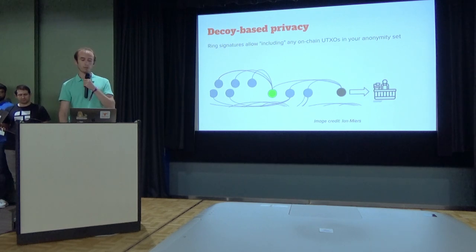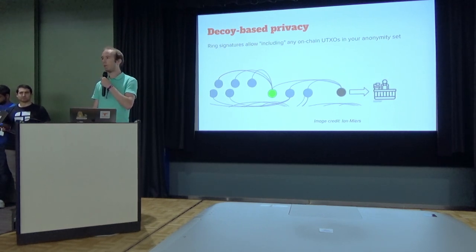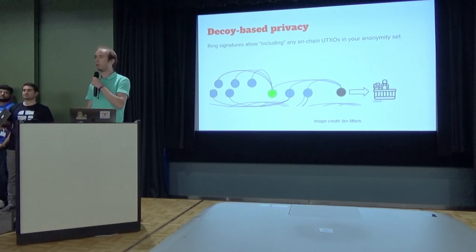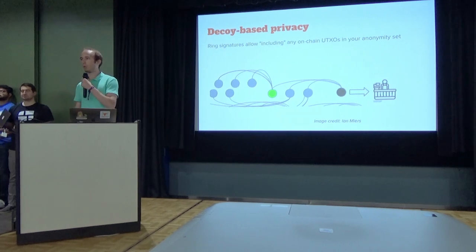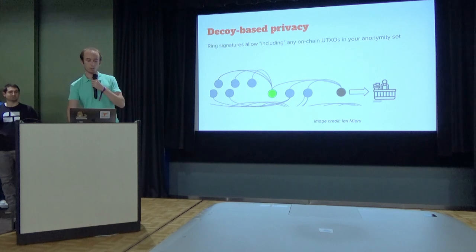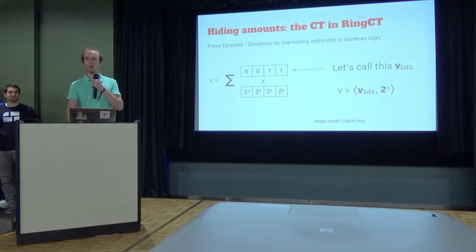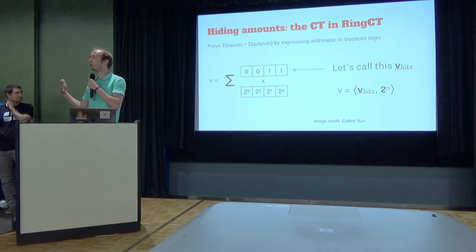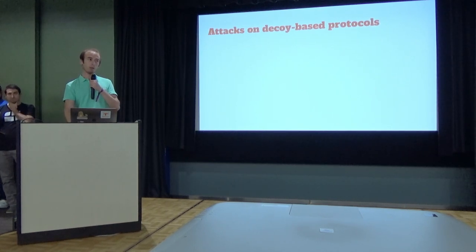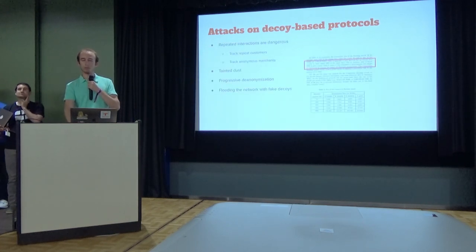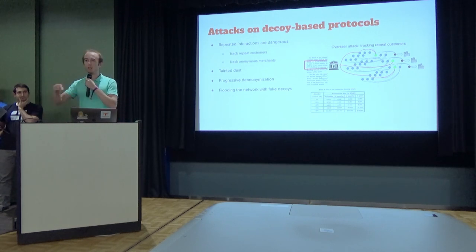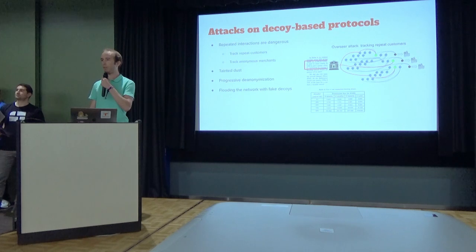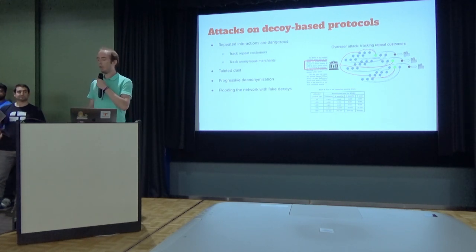The next technique is DecoyBase privacy, used in Monero. The idea is you can use any on-chain UTXO and pretend it could have been your input. Basically, every transaction has maybe 10 to 15 sources, but only one of them is real — the rest may not even know they've been used in the anonymization. However, DecoyBase protocols have suffered from attacks. There are risks of repeated interactions: if the same person pays the same recipient a few times in a row, there will be multiple paths in the transaction graph linking them. That's pretty bad.